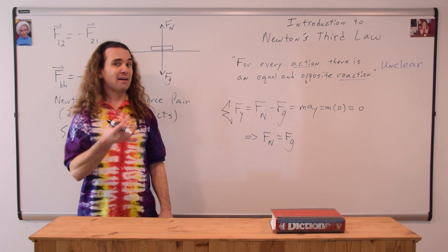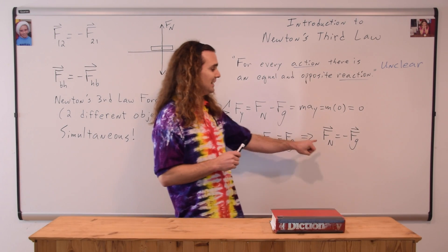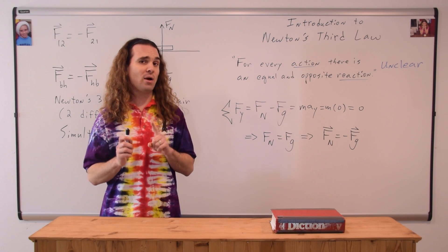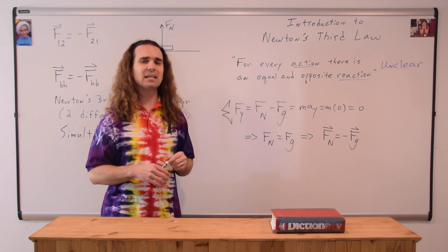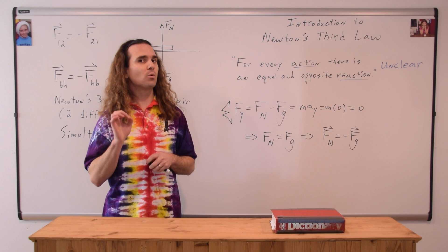Therefore, when we include vectors in our equation, the force normal is equal in magnitude and opposite in direction to the force of gravity. However, the force normal and the force of gravity are not in Newton's third law force pair. I need to know why not.